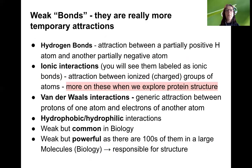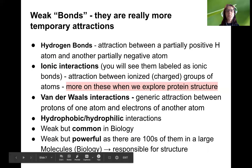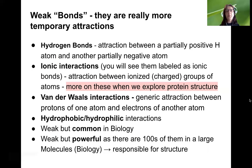There are also weak bonds in biology — really more of temporary attractions, not true bonds. The most important of these are hydrogen bonds. There are also ionic interactions, often labeled in textbooks as ionic bonds even though they're not true ionic bonds — these are attractions between ionized, charged groups of atoms. We're going to explore more of these ionic interactions when we talk about the structure of proteins.